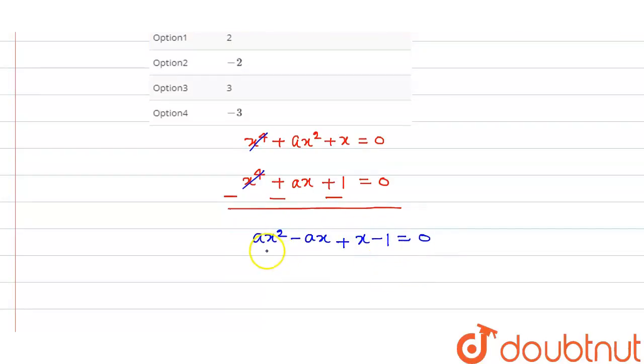Take common ax. So this is x minus 1, no problem. Take common 1 from here. So this is x minus 1 is equal to 0.